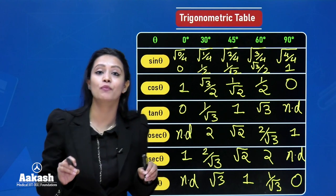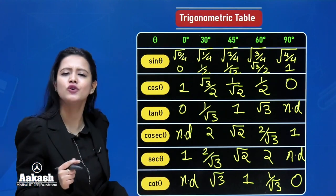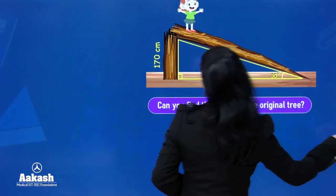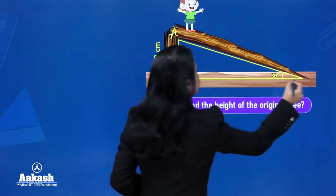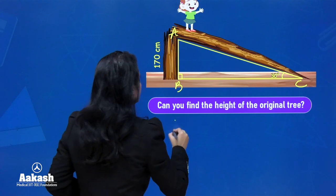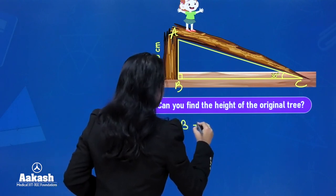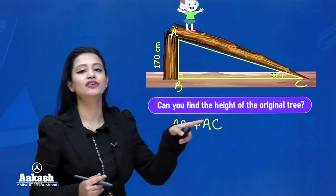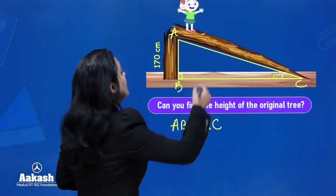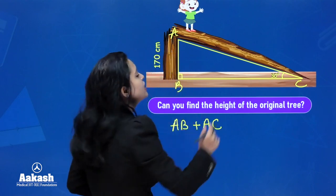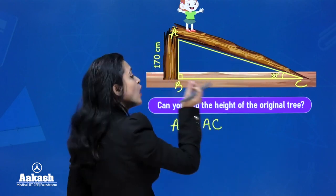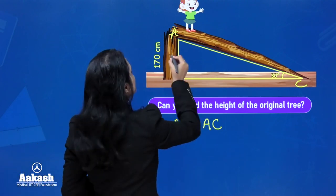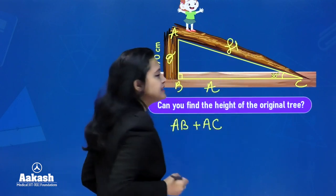Now let's solve the broken tree question from the beginning. We name the triangle ABC. We need to figure out AB + AC, where AB = 170 cm (the broken part lying on the ground) and AC is the remaining standing portion — which we need to find. We take the 30° angle as our theta. For this angle, opposite is AB, and hypotenuse is AC.